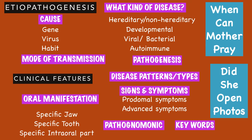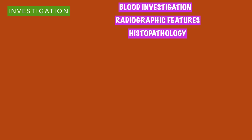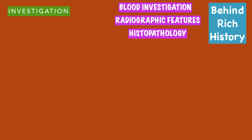The next heading is investigation. Write down any blood or urine investigations necessary — for example, urinary hydroxyproline levels are elevated in Paget's disease. Then mention the radiographic features, such as the rind sign seen in fibrous dysplasia. Most importantly, always mention the histopathological features of the disease. The mnemonic is 'Behind Rich History' — B for blood or urine investigation, R for radiographic features, and H for histopathology.